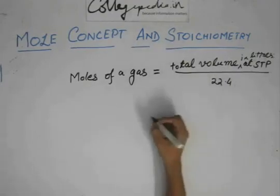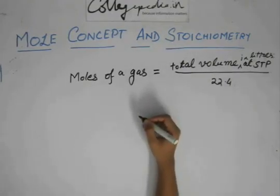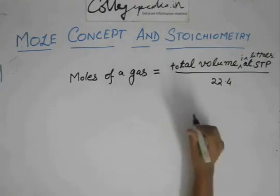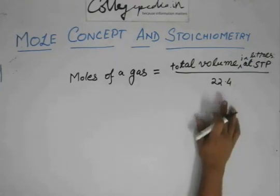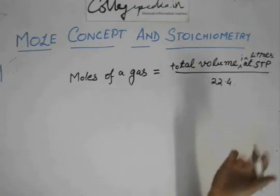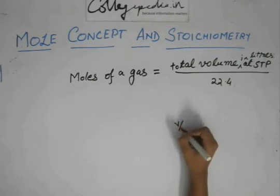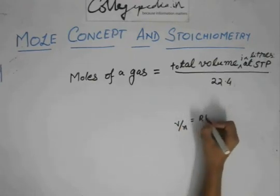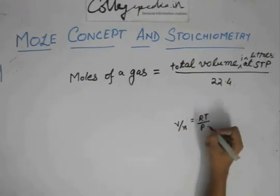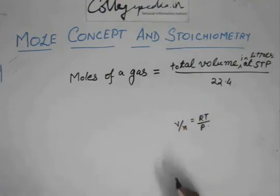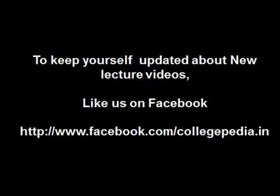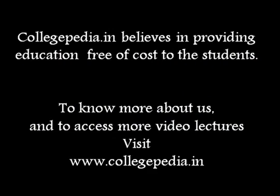Remember that this is only at STP, because a lot of mistakes are made. You cannot use this 22.4 liters for any other temperature and pressure except STP. If there is any other temperature and pressure, you will have to use V/n = RT/P, or PV = nRT, and then calculate the corresponding volume or the corresponding number of moles.